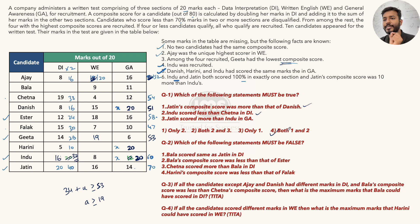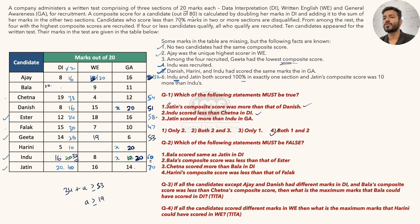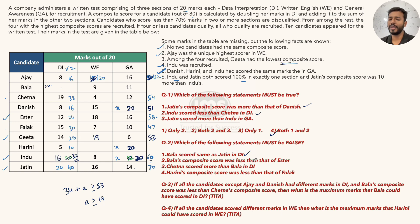Question 2: Which statement must be false? First option: Bala scored same as Jatin in DI, meaning Bala's DI = 20. If Bala's DI = 20, then double = 40, plus 9 and 11 = 40 + 20 = 60. But Indu's composite is 60, and no two composites can be the same. So Bala cannot have DI = 20. This statement is definitely false. Answer to second problem is option 1.